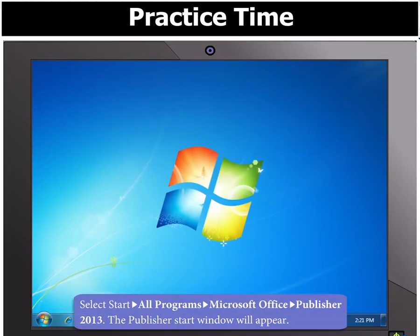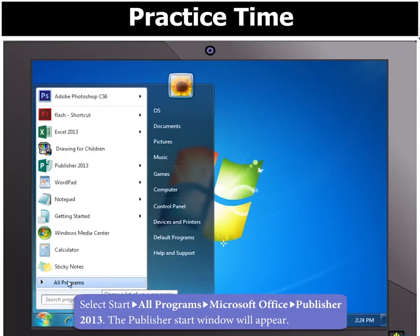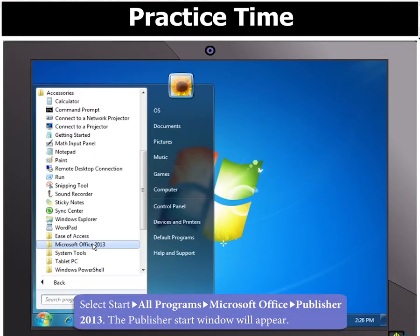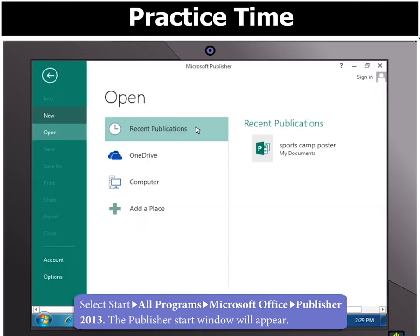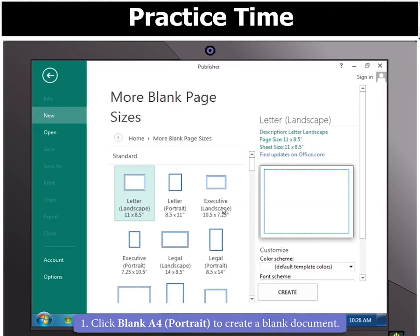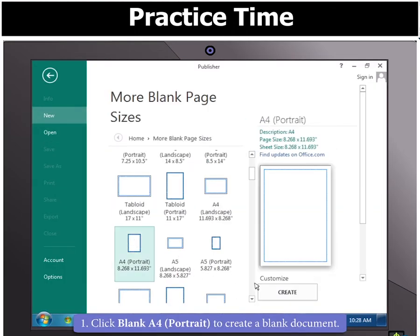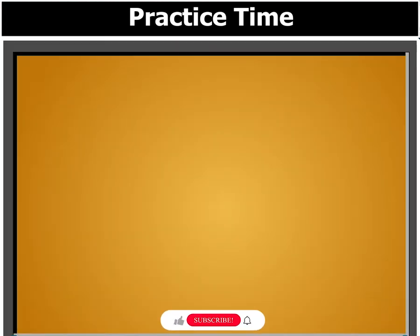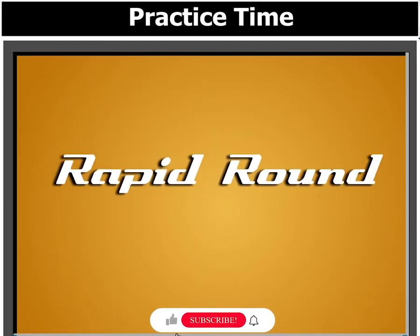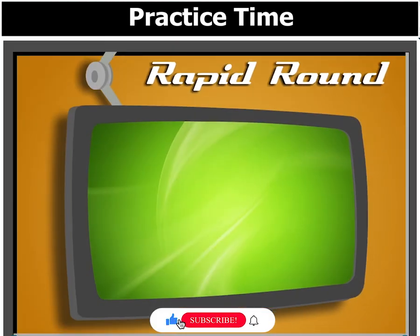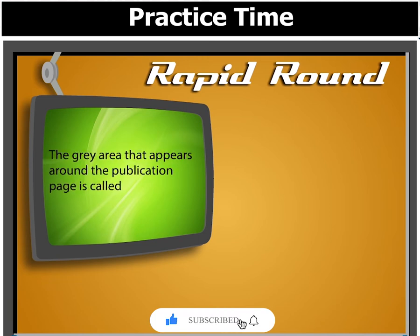Start Publisher 2013. Click Blank A4 Portrait to create a blank document. Before we start, can you answer this question? The grey area that appears around the publication page is called...